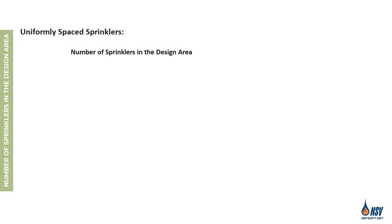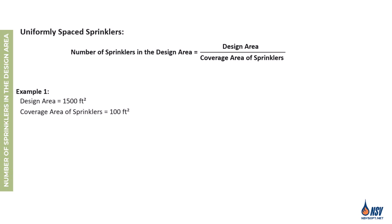Another important application of the design area is determining the number of sprinklers expected to activate during a fire incident. When sprinklers are uniformly spaced, we can calculate this by dividing the design area by the coverage area of each sprinkler, typically determined using the S by L method. For example, if the design area is 1,500 square feet and each sprinkler covers 100 square feet, then the number of sprinklers in operation would be 15. It's important to note that if the result is not a whole number, we always round up.